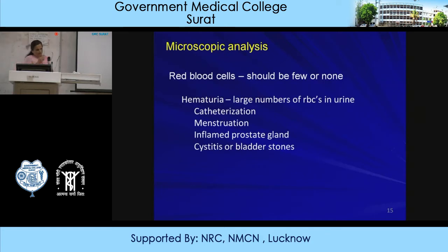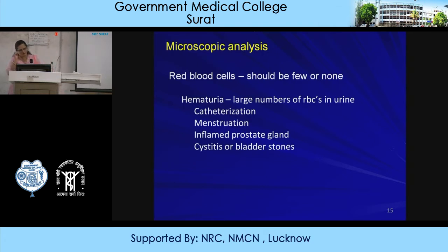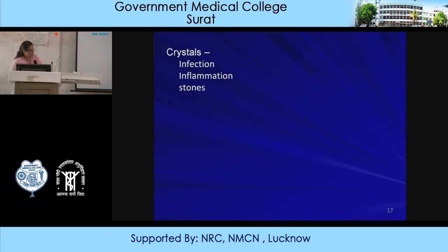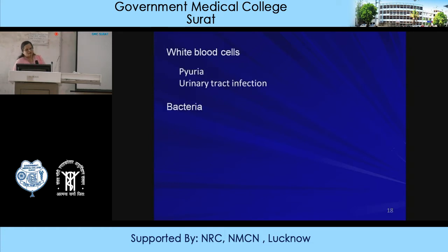Hematuria is a condition where RBCs are present - it may occur normally during menstruation or with catheterization, cystitis, bladder stones, inflamed prostate, benign hypertrophy, or cancerous conditions. Casts are precipitates from cells lining the renal tubule: red cell casts indicate tubular bleeding, white cell casts indicate tubular inflammation, and epithelial cells can be seen in degenerative sclerosis of the glomerulus.